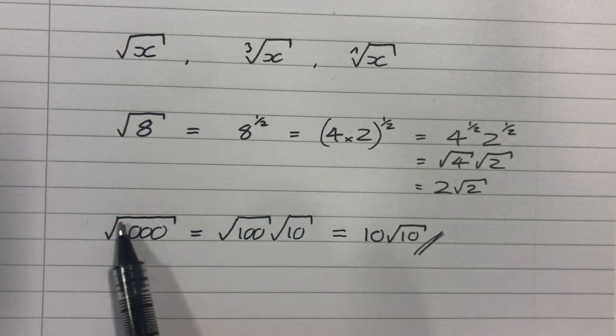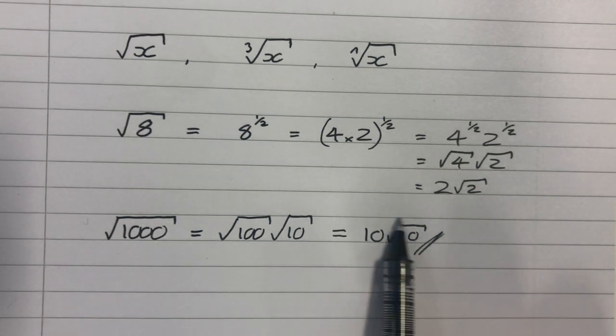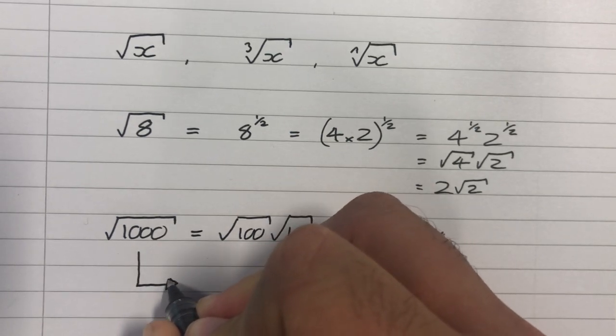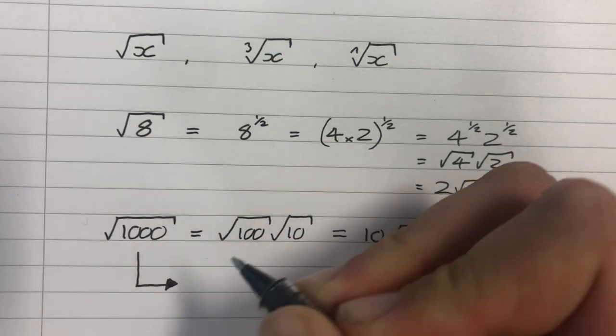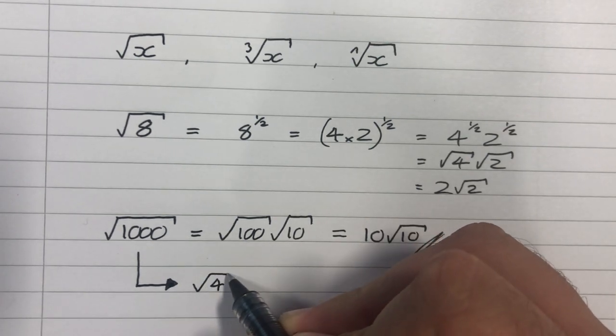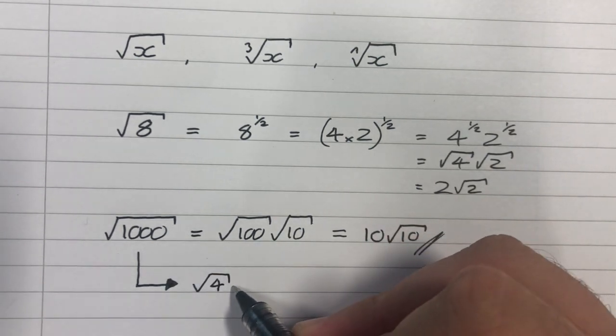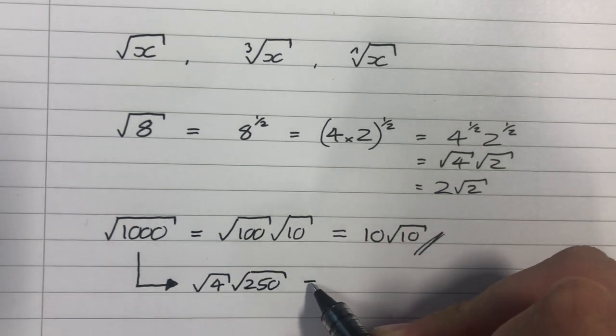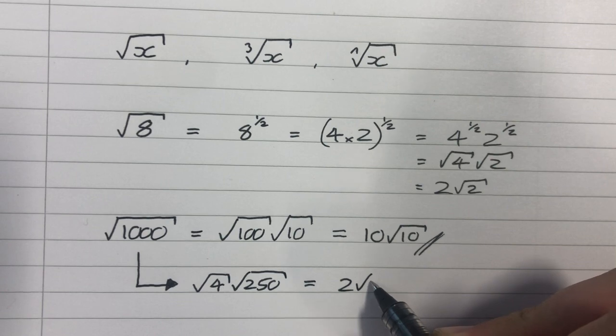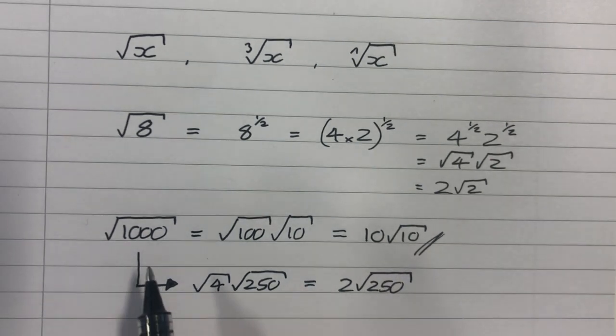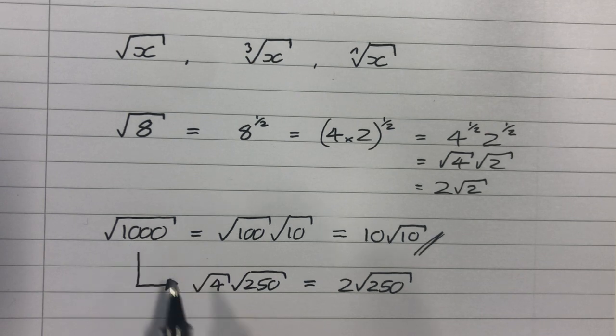So instead of leaving something as root 1,000, we would leave it as 10 root 10. But for argument's sake, let's say that we didn't spot the 100 first of all. And we say, well, actually, I know that 4 goes into 1,000. And it goes in 250 times. So I can write this as 2 root 250, which is correct.